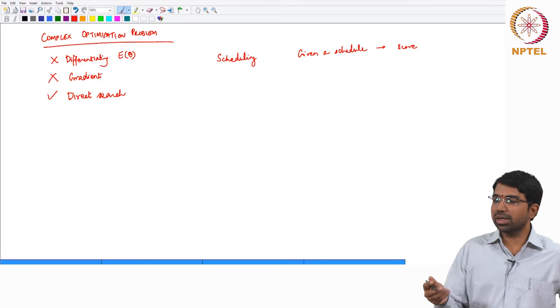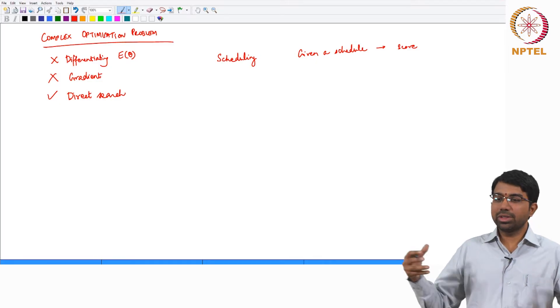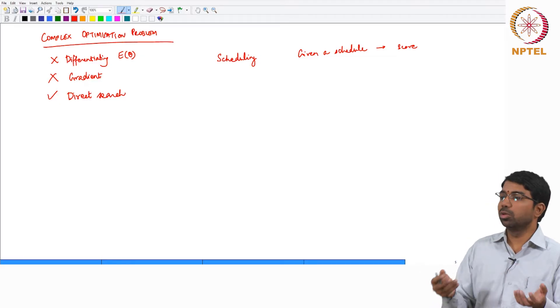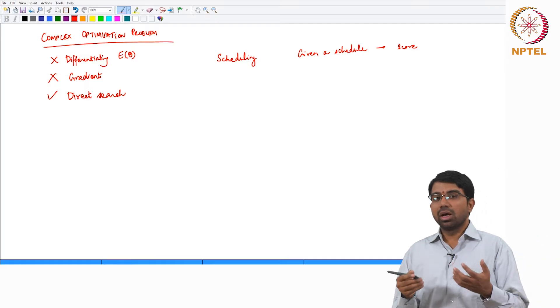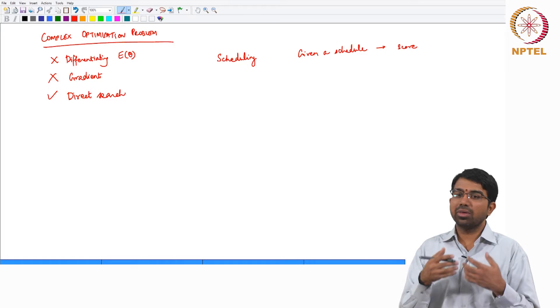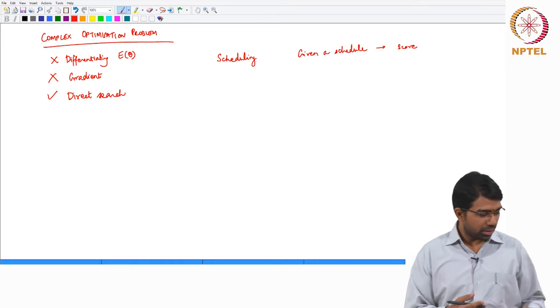So how do you do this mutation and crossover? You need to somehow take one schedule, convert it to another schedule, or take two schedules and mix them up to form a third related schedule. This would be mutation and crossover. Your regular concepts will end up having different meanings depending upon the problem in question.